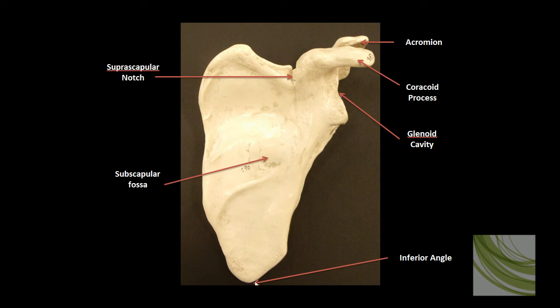At the very bottom is the inferior angle. Here is the subscapular fossa and the suprascapular notch. This notch serves as the passage of the suprascapular nerve.